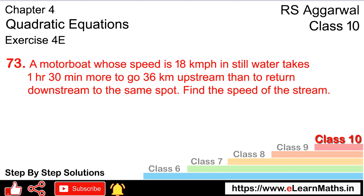Let's do question number 73 of exercise 4E, that is quadratic equations according to the 2020 edition. A motor boat whose speed is 18 km per hour in still water takes 1 hour 30 minutes more to go 36 km upstream than to return downstream to the same spot.